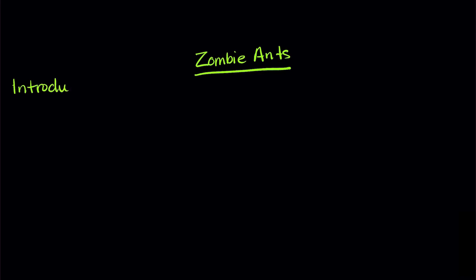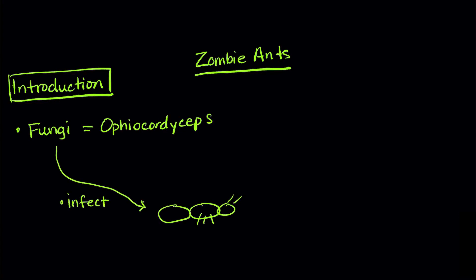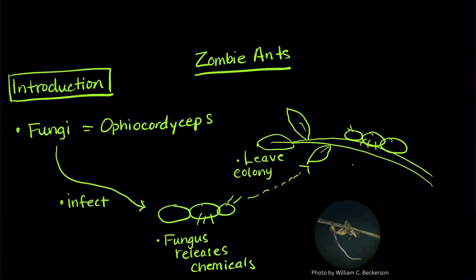Let's start with an introduction so we're all on the same page. There are lots of fungi that can infect insects. Some kill the insect right away, but others can infect the insect and change their behavior. So today we're going to talk about a fungus called Ophiocordyceps. This fungus infects an ant and releases chemicals that change the ant's behavior.